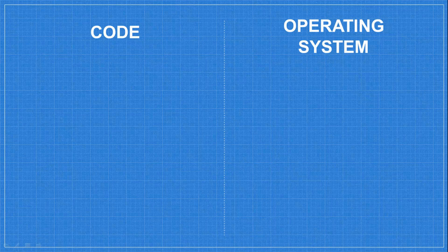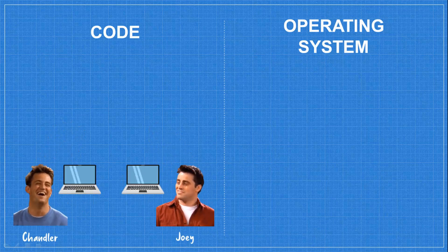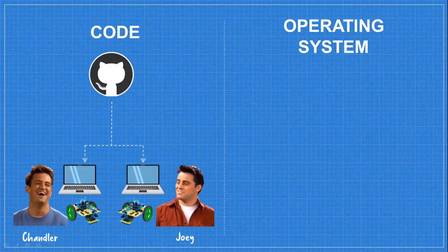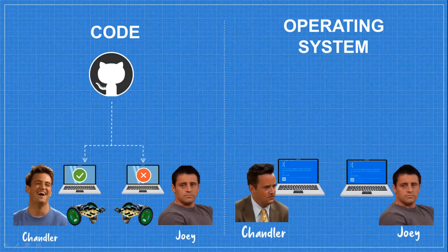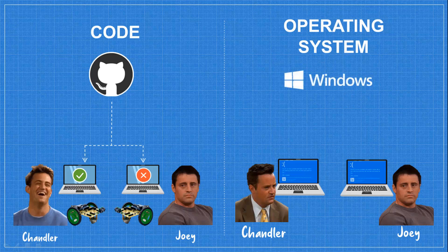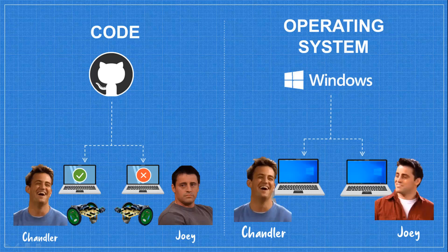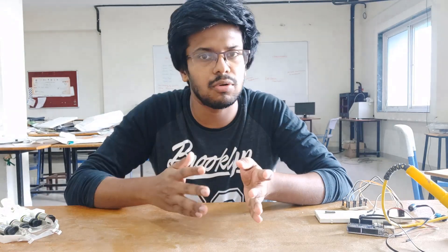Let's take a scenario where two people, Chandler and Joey, have the same Windows laptop and have downloaded the same code to make a line following robot. Now say both of them want to add obstacle avoidance as a feature to their robot. They both search over the internet and find the same approach. Now when Chandler uses this solution on his robot, it works perfectly. While when Joey uses the same code and the same type of robot, it doesn't work just because of some driver issues over the software or operating system. Now just imagine both of them having the same problem — can they Google the problem and try different solutions, or should they simply update or patch their OS with the trusted Microsoft update which solves common problems? Well, everyone prefers updating.